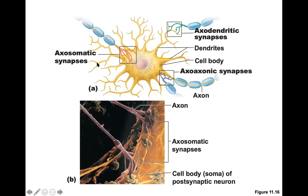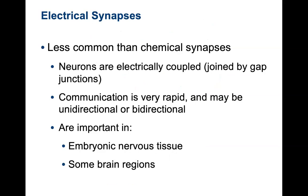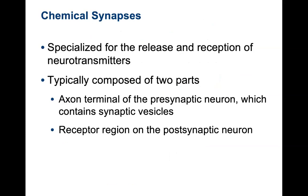A synapse could be an axodendritic synapse — from the axon of one neuron to the dendrites of another — axosomatic, or axoaxonic. There are different types of connection points. Electrical synapses are less common; your most common synapse is a chemical synapse, which is what we saw with skeletal muscles and the release of acetylcholine.